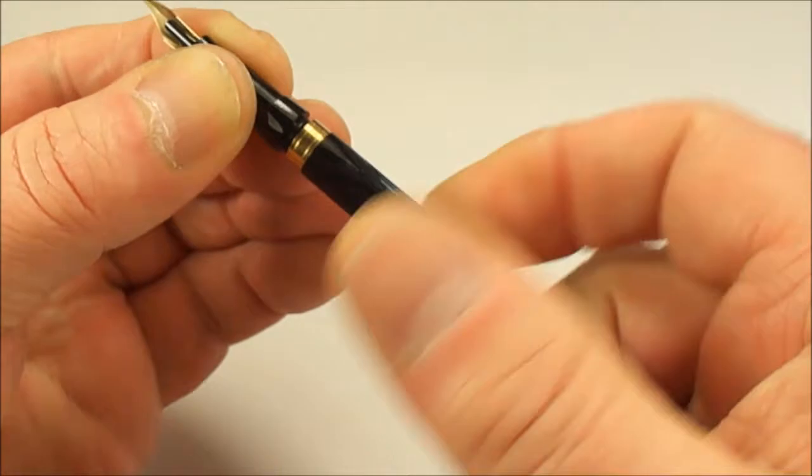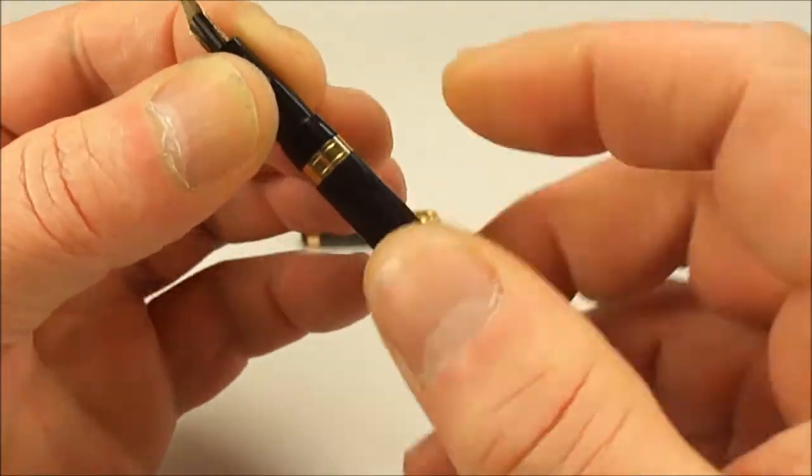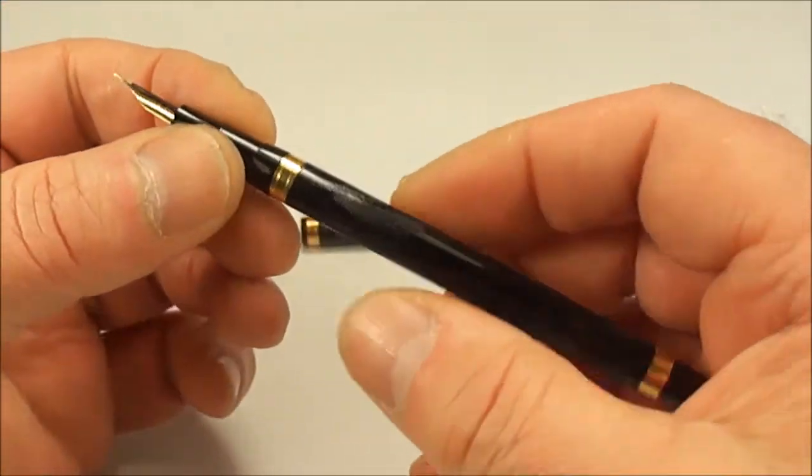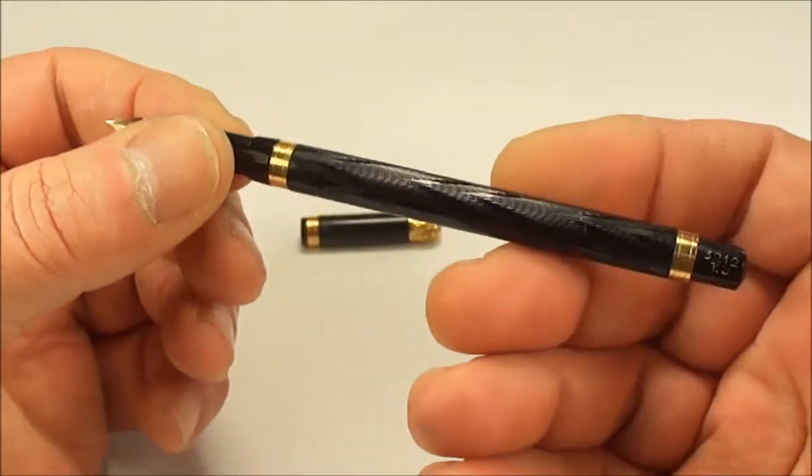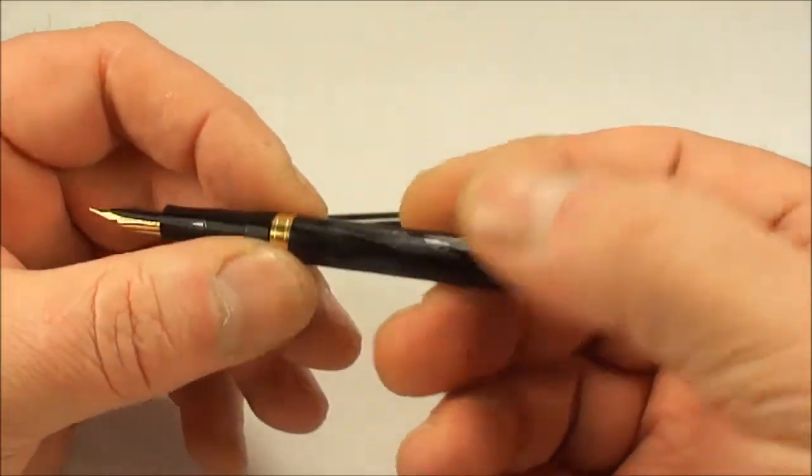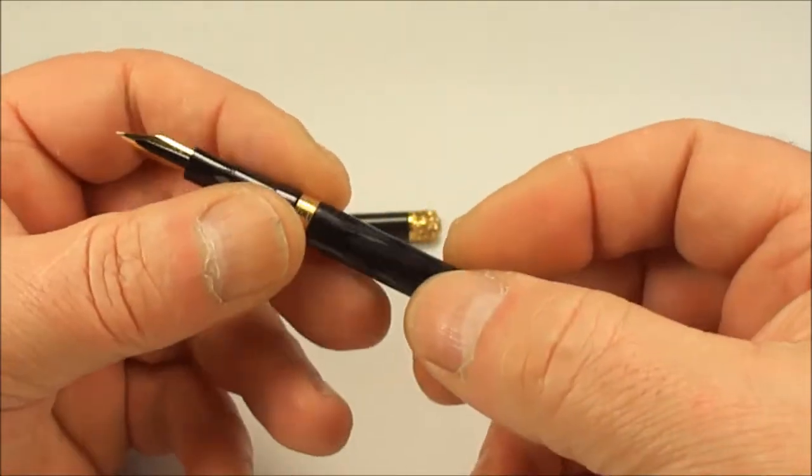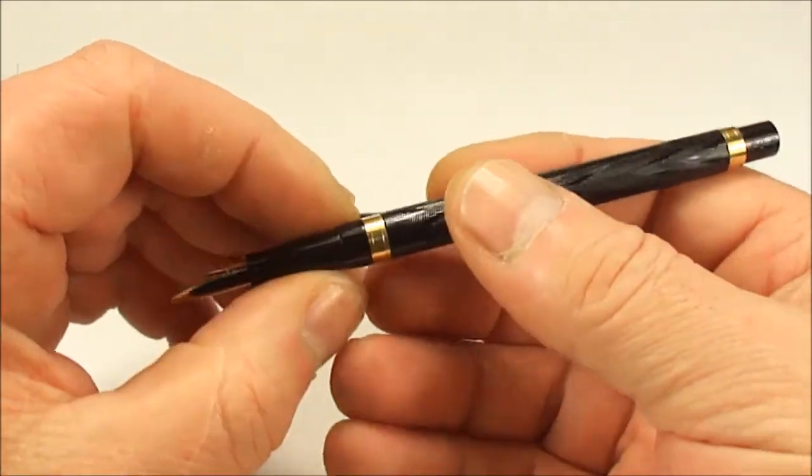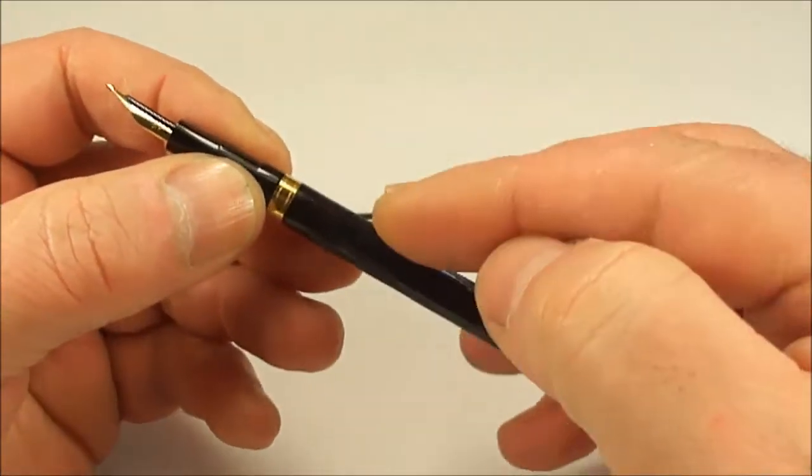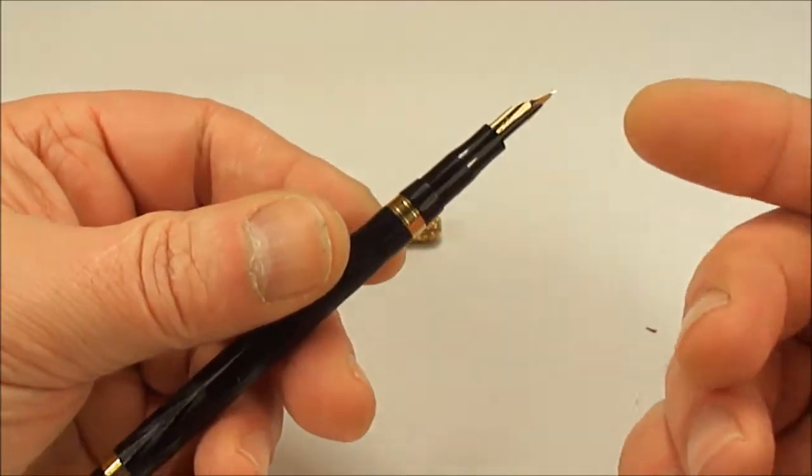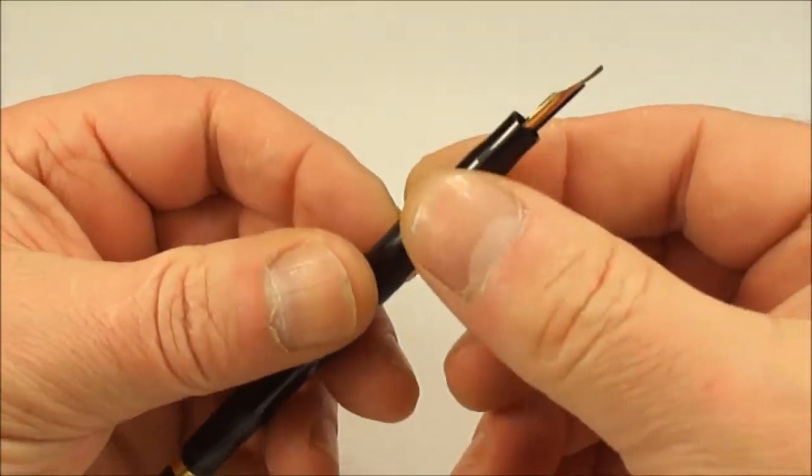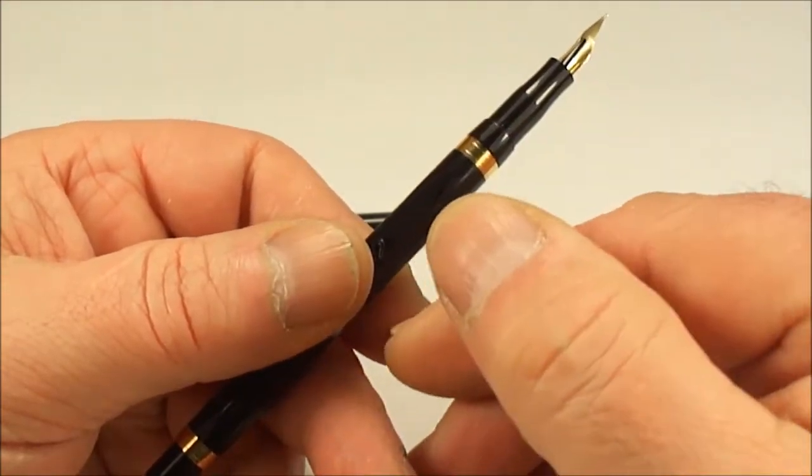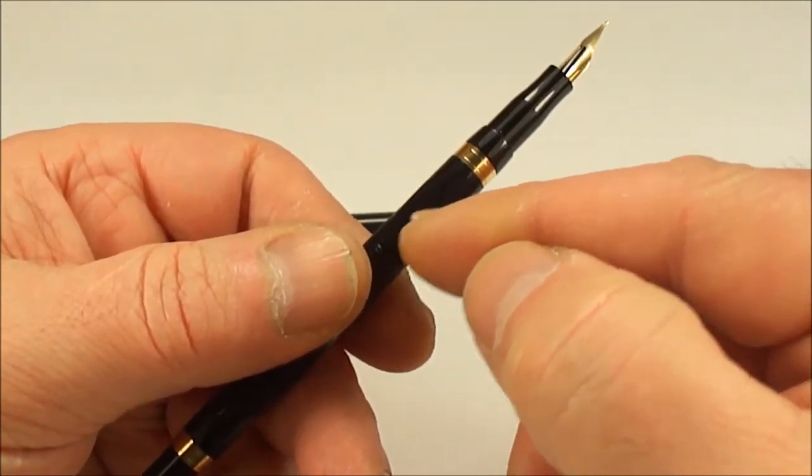The barrel gets screwed back on. It screws on nice and tightly. I'm going to do something different because I've had a look at the nib already and it's got an absolutely gorgeous flex nib on it. So what I'm going to do is readjust the camera, I'm going to fill the pen up. You get an eyedropper and you would simply take the section off and fill the pen. As it says in the instructions, fill the pen inside with ink and then screw it back and away you go.